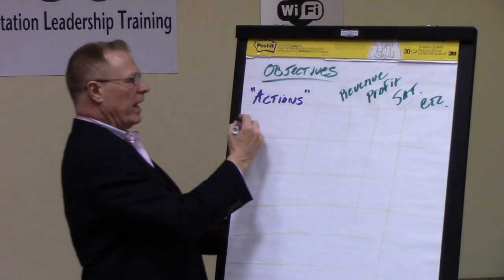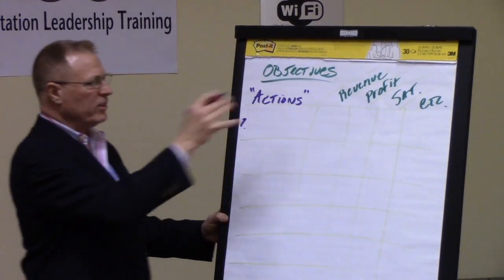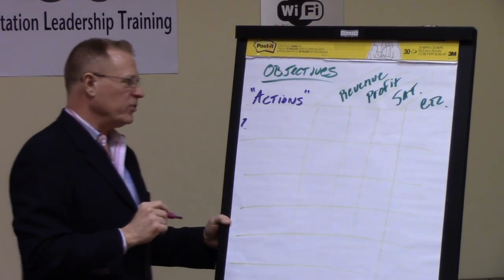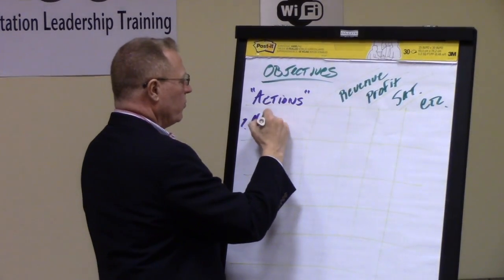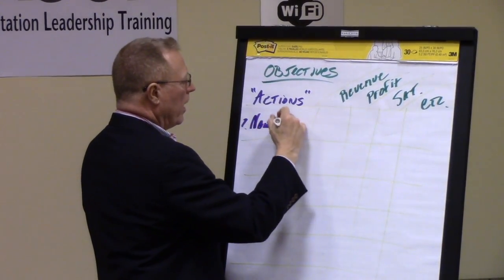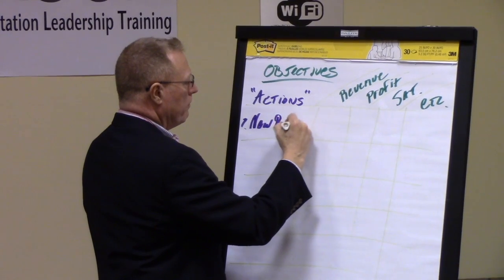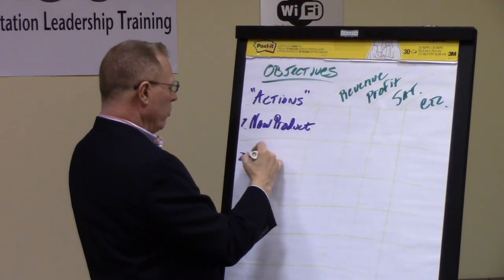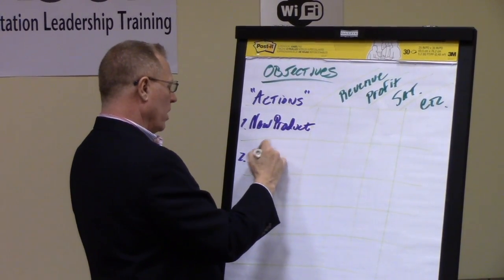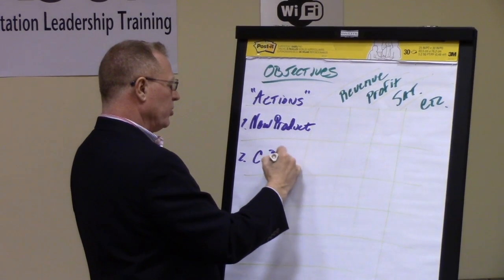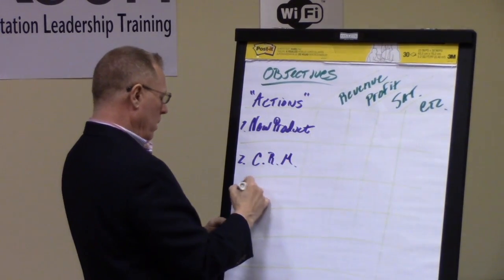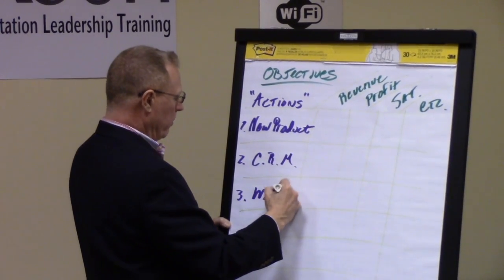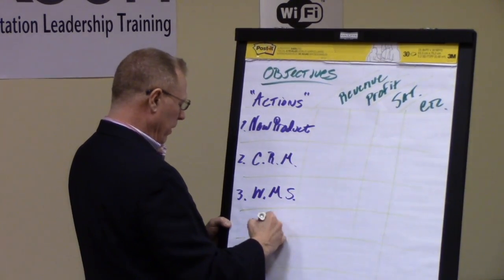Let's say at a strategic level we've identified some actions to reach these enterprise objectives — things such as a new product launch, a new process for customer relationship management, a new warehouse management system, etc.